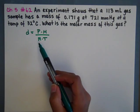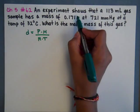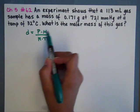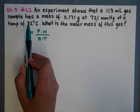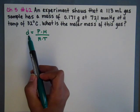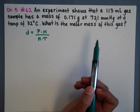We have most of these in the formula. We have a mass, a pressure, we have a temperature, we always have R. What we don't have is density and we're solving for molar mass.